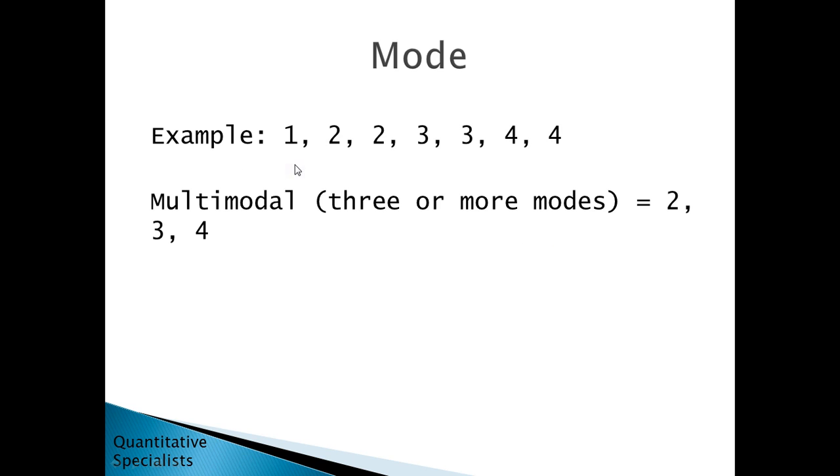In this last example with the mode, we have 1, 1, and then two of each of the following: 2's, 3's, and 4's. Since there's three values that each occur twice, which is the most often, we just say multimodal. Usually when you have three or more modes you'll use the term multimodal. The modes here are 2, 3, and 4.